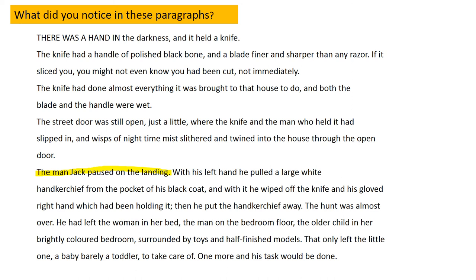The use of vocabulary in these sentences is also important. Here we have 'wisps of night' — 'the mist slithered and twined.' These are not words that we may use in everyday conversation, but are words we would like our students to use as they become more experienced writers. It's really helpful if we talk about how these words impact the writing, impact that paragraph. Could they use a better word? A more effective word? A less effective word? Doing work like this with our students helps them understand the importance of using a wide range of vocabulary.